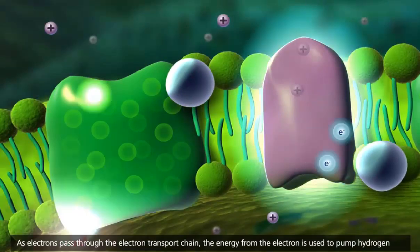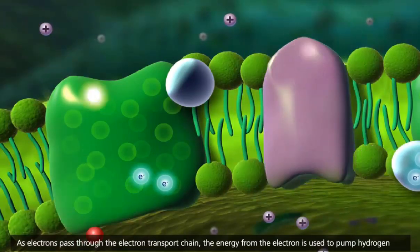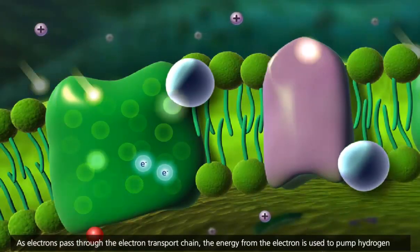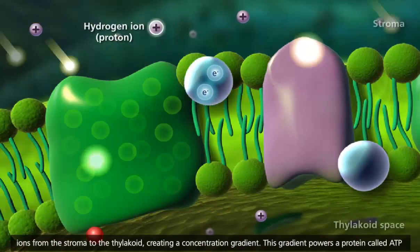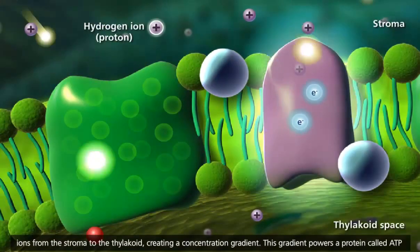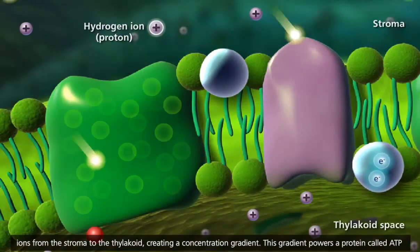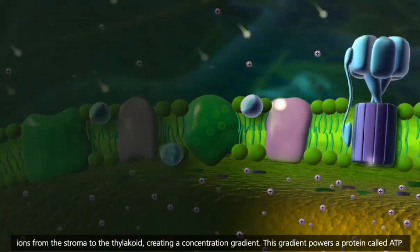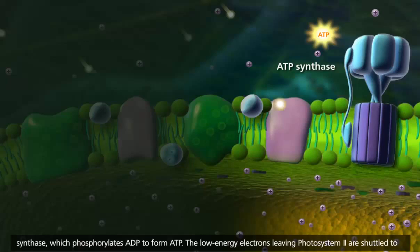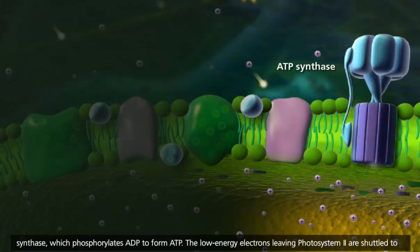As electrons pass through the electron transport chain, the energy from the electron is used to pump hydrogen ions from the stroma to the thylakoid, creating a concentration gradient. This gradient powers a protein called ATP synthase, which phosphorylates ADP to form ATP.